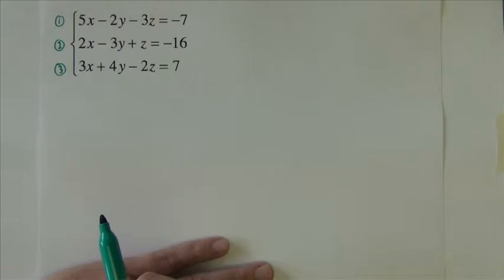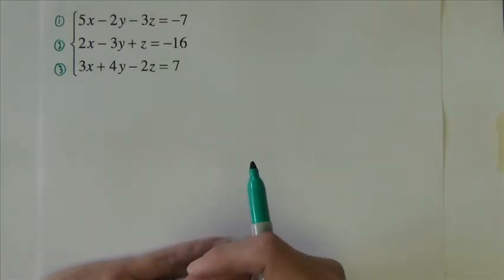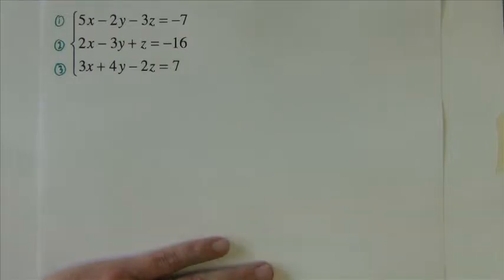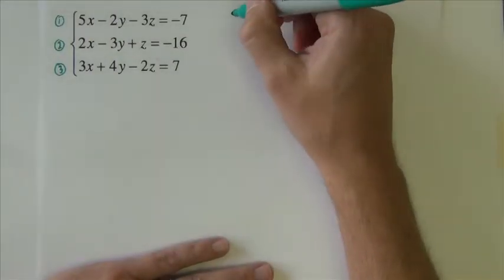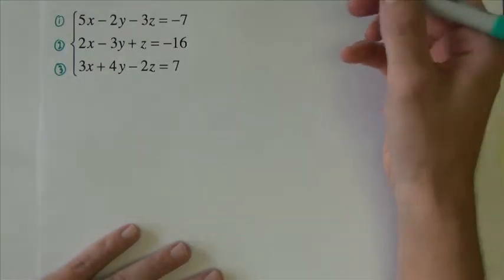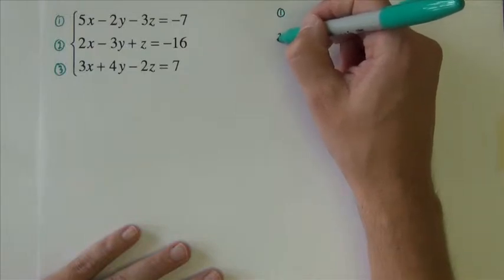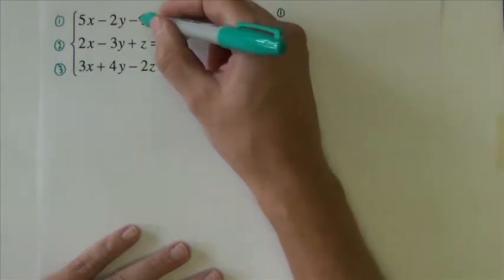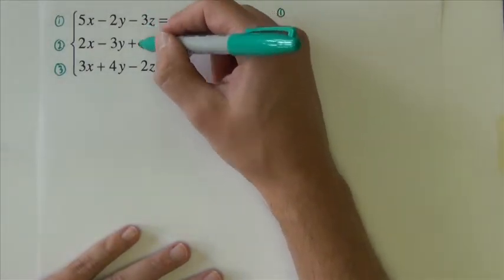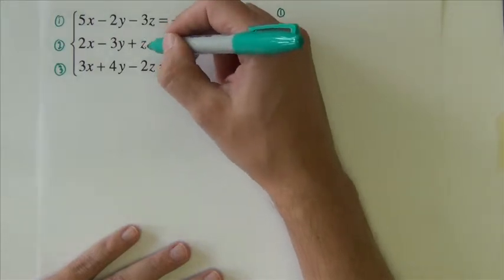Now the first thing to do is try to, using elimination method, eliminate some variables. I'm going to use equations one and two. I'm going to try and cancel the z's because they look like they can cancel pretty easy if I just change this one here.